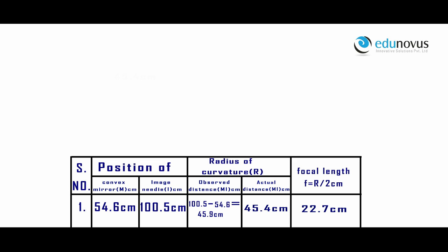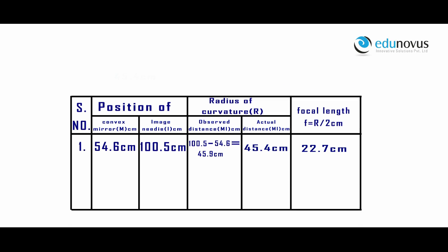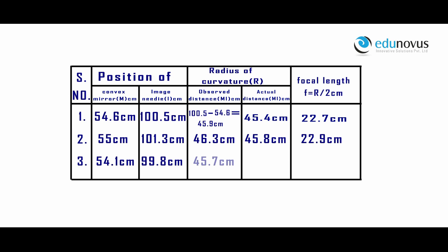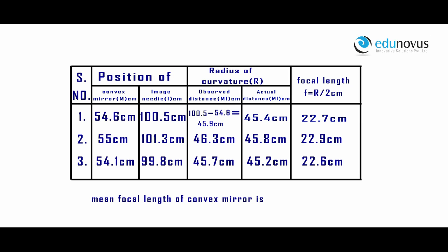Similarly, the other readings are taken. The mean focal length of the convex mirror is 68.2 divided by 3, which equals 22.73 centimeters.